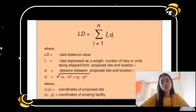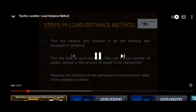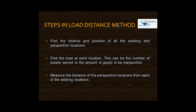To calculate the LD score for any potential location, we multiply the loads flowing to and from the facility by the distances traveled. Travel time, actual miles, or rectilinear distances when using a grid are all appropriate measures. The distance between two points is expressed by assigning the points to grid coordinates on a map. First, find the relative grid position of all existing and prospective locations by placing a map on a graphical sheet.